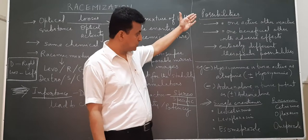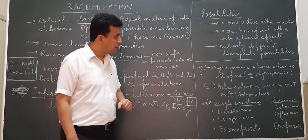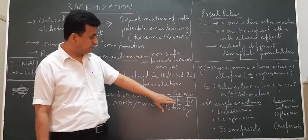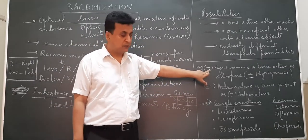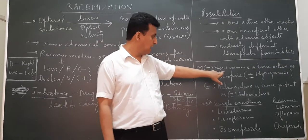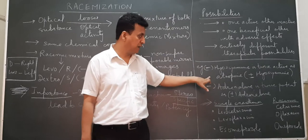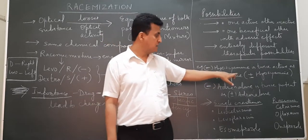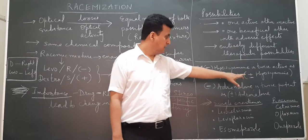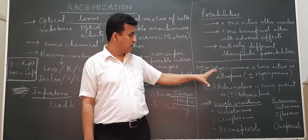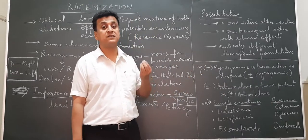Here are some examples. The levo form of hyoscyamine is twice as active as atropine. Atropine is the racemization consisting of both dextro and levo forms, and the levo form hyoscyamine is twice as active. Similarly, the levo form of adrenaline is twice as potent as the racemization.